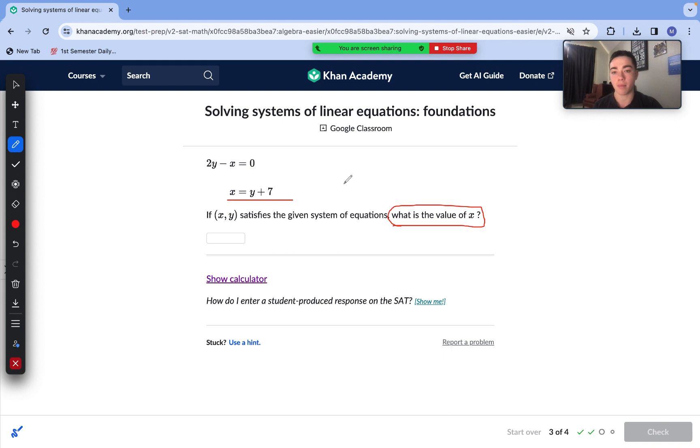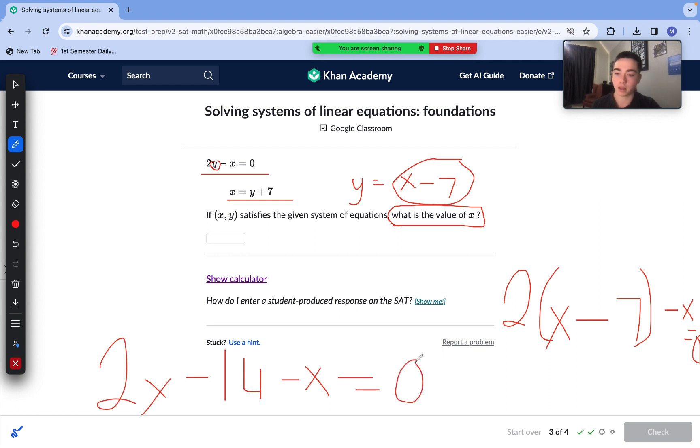We can isolate the y by moving over the 7. We are left with y equals x minus 7. And then we can substitute our x minus 7 value for y into our first equation. So once we do that, it looks like 2 parentheses x minus 7 parentheses minus x equals 0 because we just substituted out the y for our expression x minus 7. Now we can distribute 2x minus 14 minus x equals 0. Combine some like terms. 2x minus x is just x. x minus 14 equals 0. How we isolate x, we just add that 14. x equals 14.